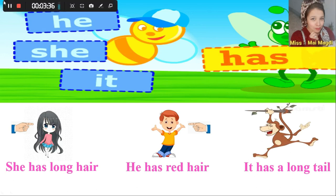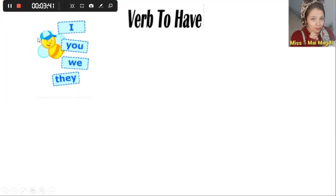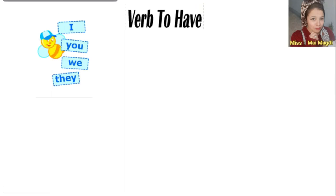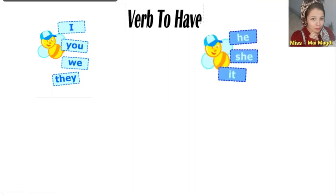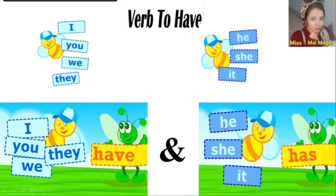Let's repeat again. Are you ready? I, you, we, and they come with 'have.' He, she, and it come with 'has.' Again: I, you, we, they — come with 'have.' He, she, it — come with 'has.' Excellent!